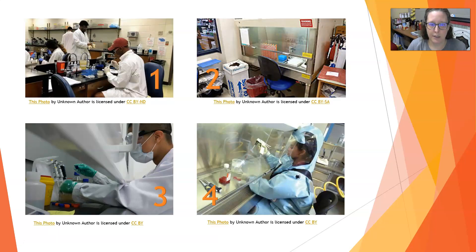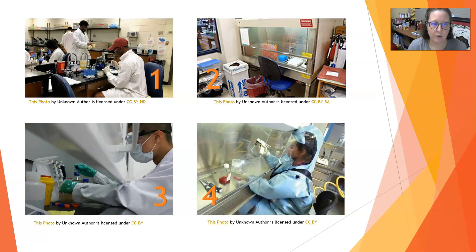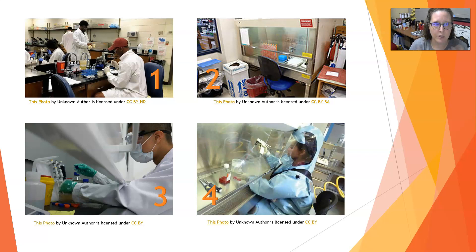Biosafety Level 1 is what you can think of as a typical student lab, and even some hospital labs. Work is done on the bench, and the microbes manipulated there are non-pathogenic or very low risk — for example, a non-pathogenic strain of E. coli. Students still need gloves, lab coats, and goggles to avoid splash risk, but biosafety cabinets are not required. Disposal in proper biohazard containers and hand washing are all that's required.